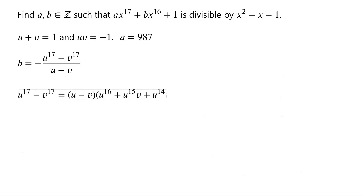The numerator u to the power of 17 minus v to the power of 17 can be factorized and written as u minus v times u to the power of 16 plus u to the power of 15 times v plus u to the power of 14 times v squared plus so on plus u squared times v to the power of 14.